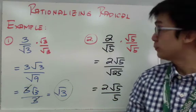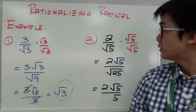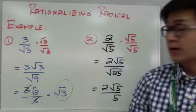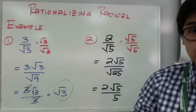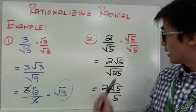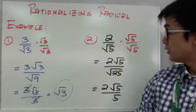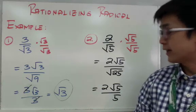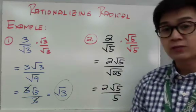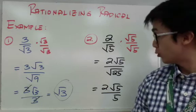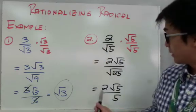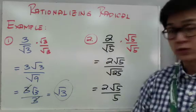For example number 2, we have 2 over square root of 5. We multiply both the numerator and denominator by the square root of 5, and we'll have square root of 25 in the denominator. Square root of 25 is 5, and since we cannot simplify the fraction anymore, 2 over square root of 5 is simply 2 square root of 5 over 5.